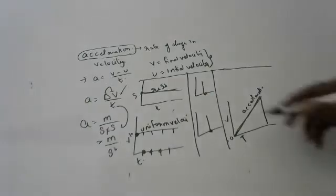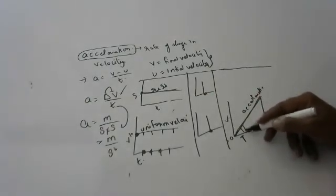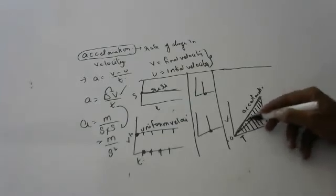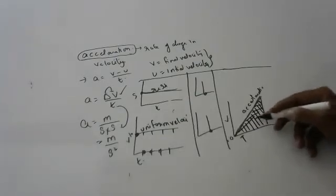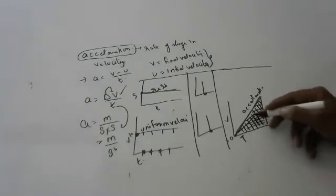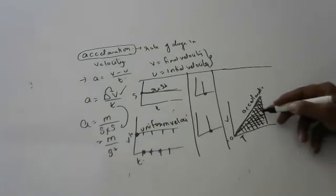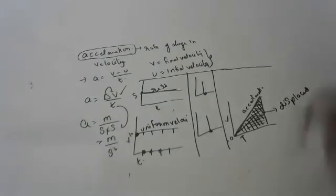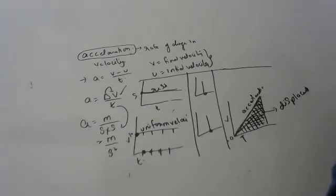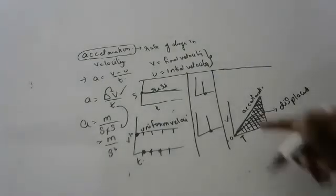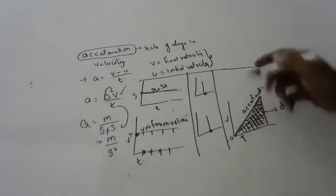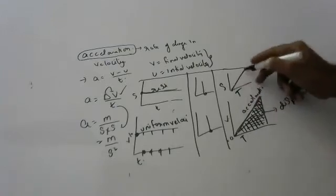In a velocity-time graph, the area under the graph gives displacement. The area of the velocity-time graph is displacement. A straight horizontal line in a V-T graph indicates uniform acceleration, and in an S-T graph it indicates uniform motion.